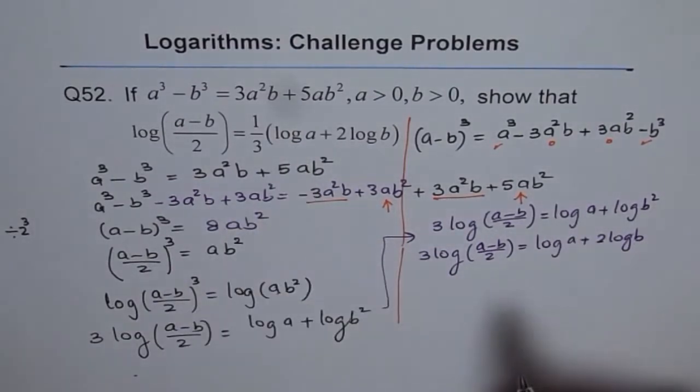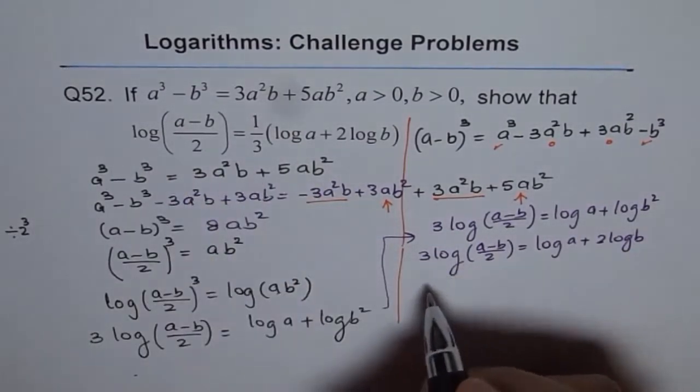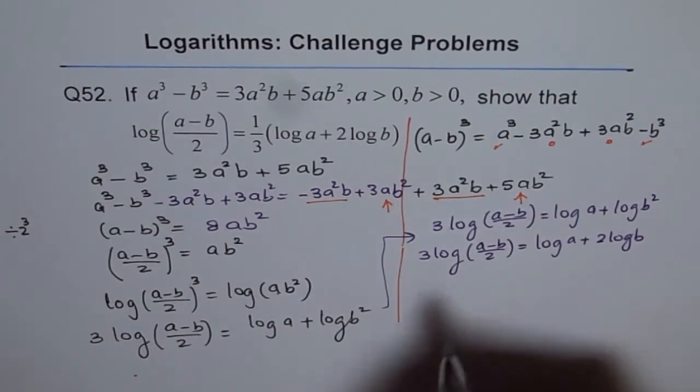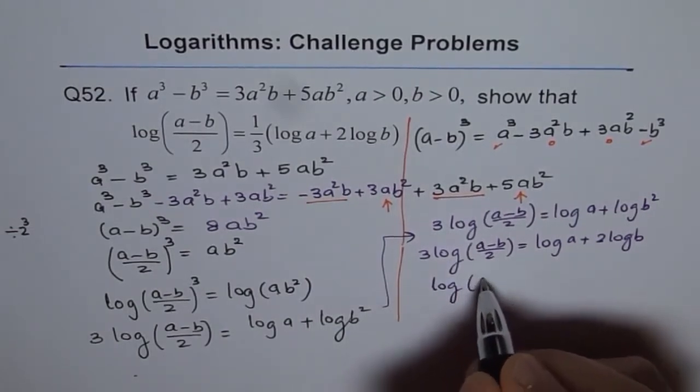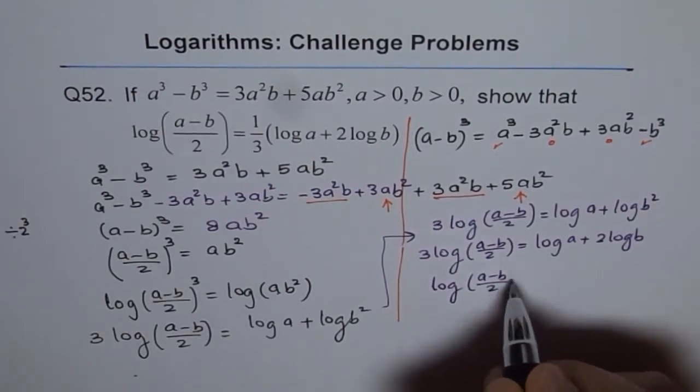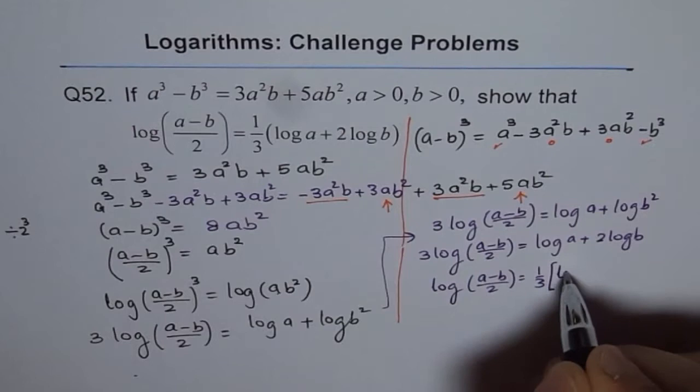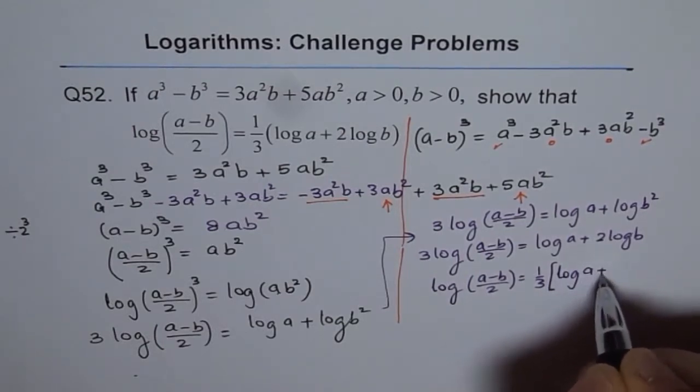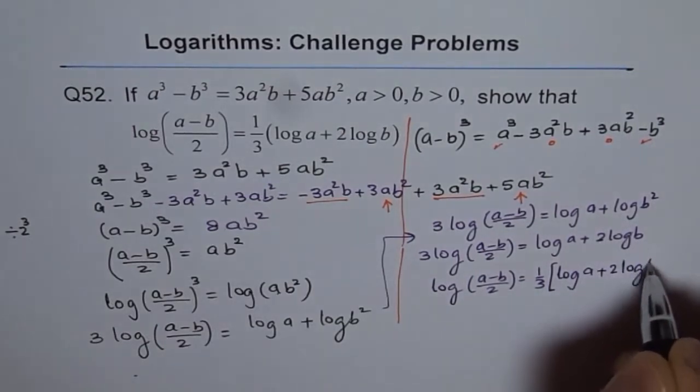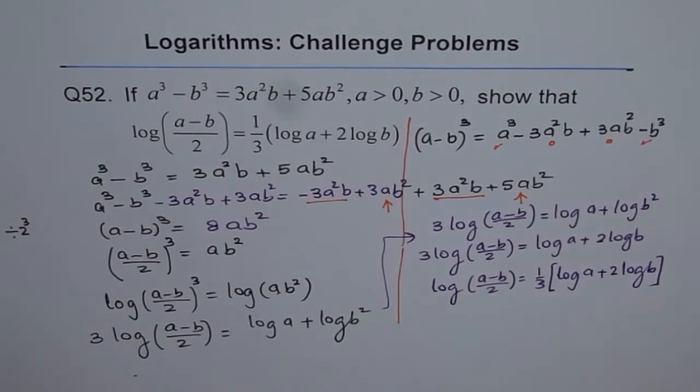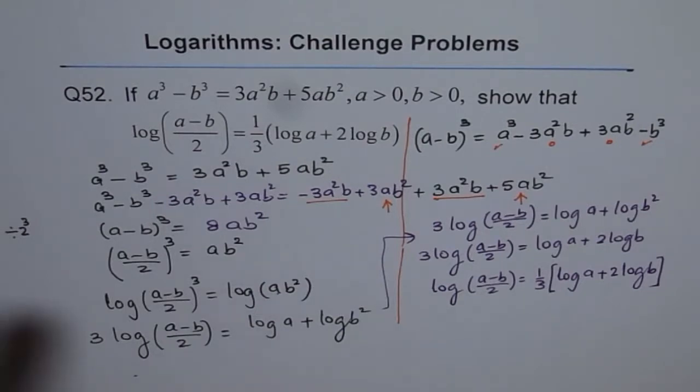Well, that is what it is. So, we just need to isolate log a minus b over 2 and then get our results, which is log of a minus b over 2 equals to 1 third of log of a plus 2 times log of b. And that is how we can show that a cube minus b cube equals to this. Then, that is true. Perfect.